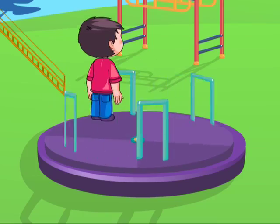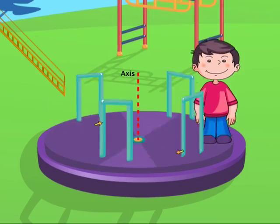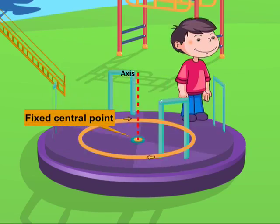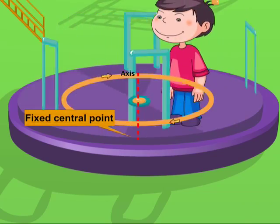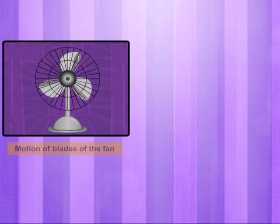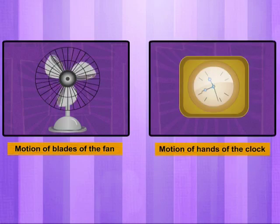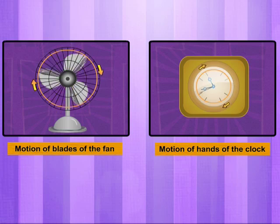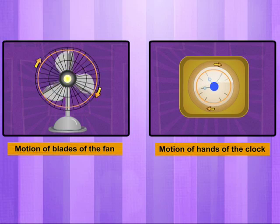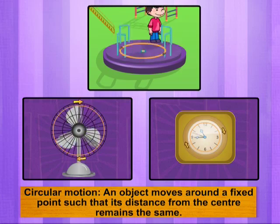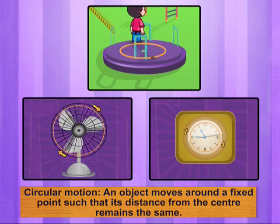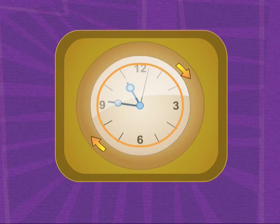The little child on the merry-go-round is moving along a circular path. The center point of the merry-go-round remains fixed, and the merry-go-round moves around an axis passing through this central point. Now observe the motion of the blades of a fan or the hands of a clock — in both these motions, just as in the merry-go-round, an object is moving around a central fixed point or an axis. When an object moves around a fixed point such that its distance from the center remains the same, it is called circular motion.